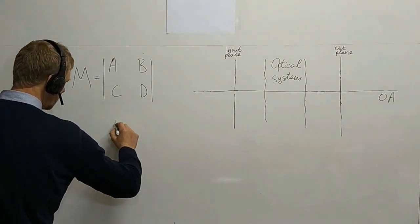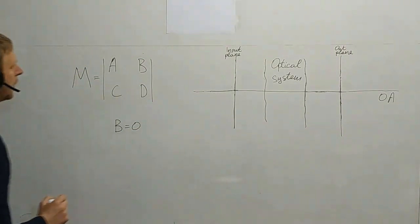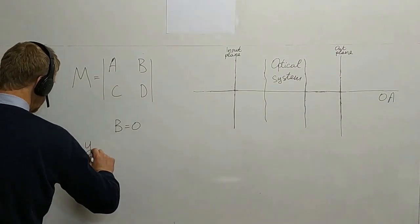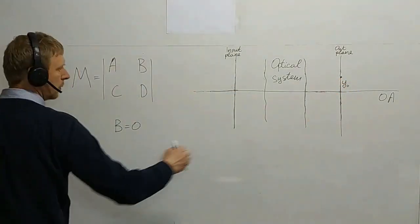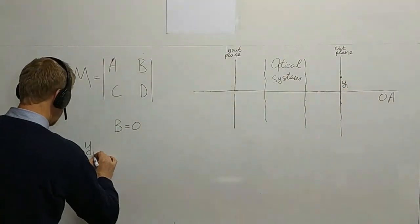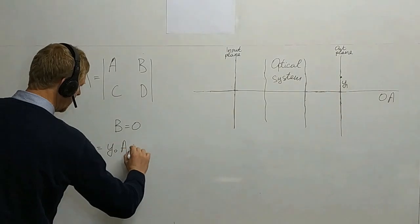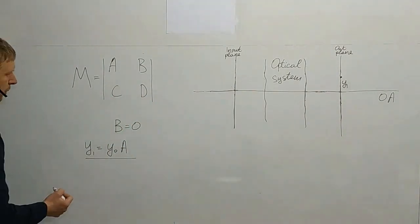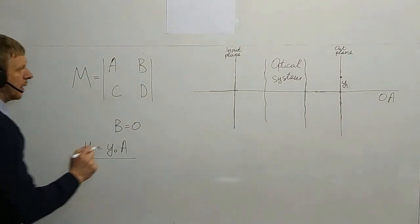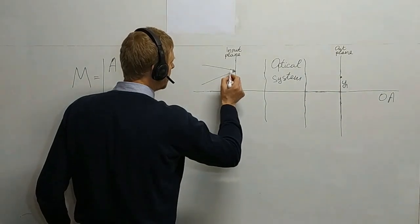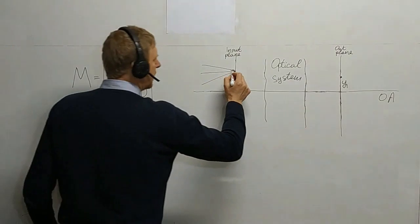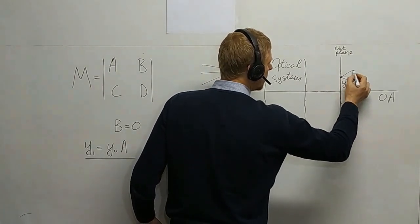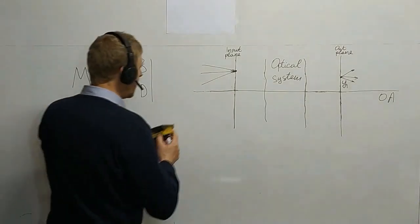If element B of the ray transfer matrix equals zero, the equation for y1 becomes y1 = A·y0 only — the position in the output plane depends only on the position in the input plane, regardless of the angle. So if I send several rays to the input plane at different angles but at the same position, they will arrive at the same position in the output plane, though at different angles.